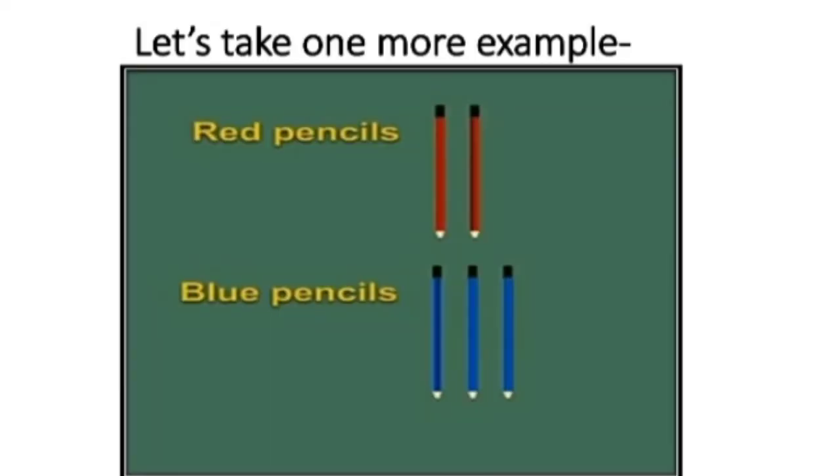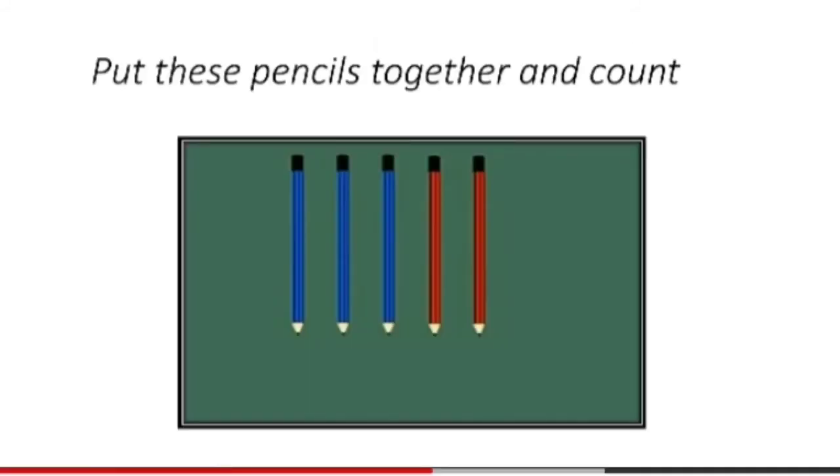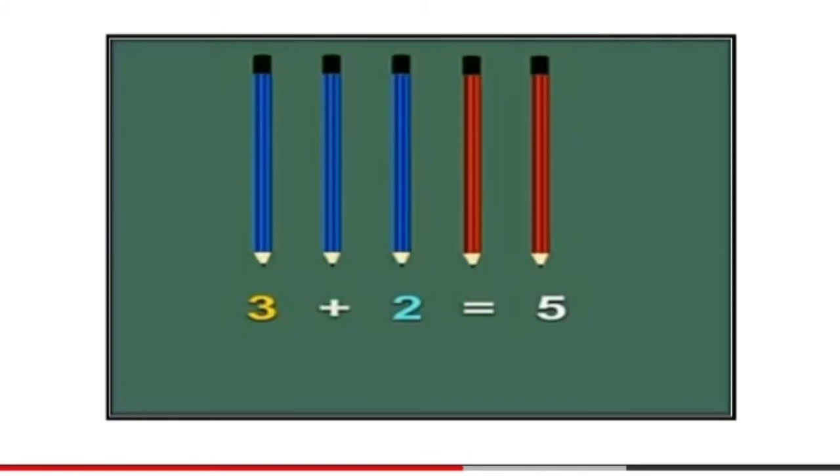Let us take one more example. Here you can see two red pencils are there and three blue pencils are there. So, put these pencils together and count. Three plus two is equal to five. So, five pencils are there.